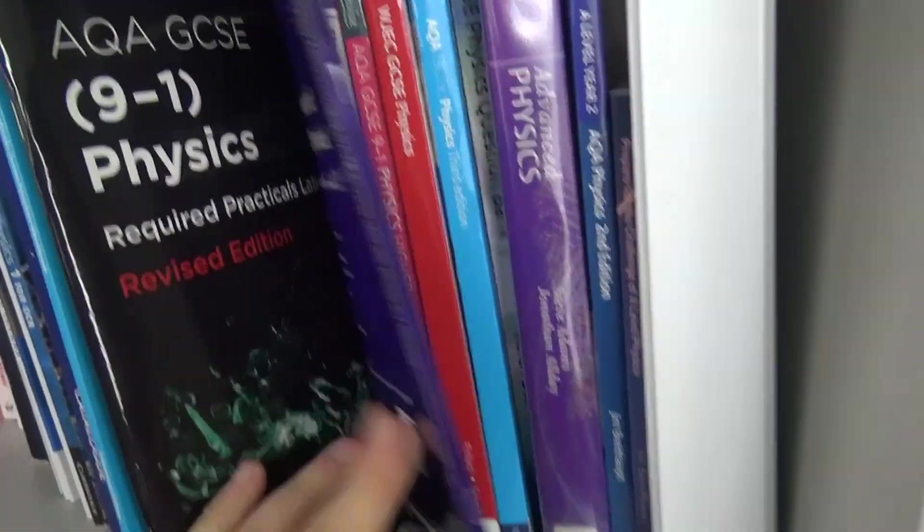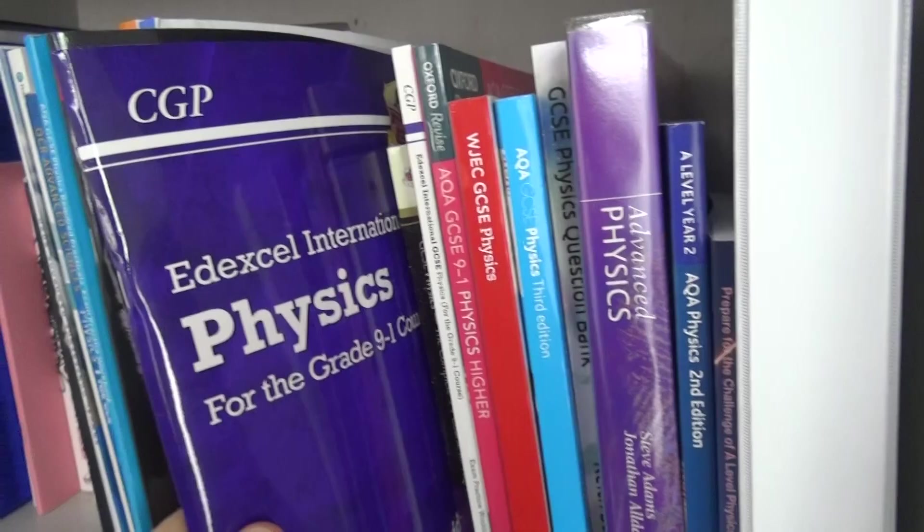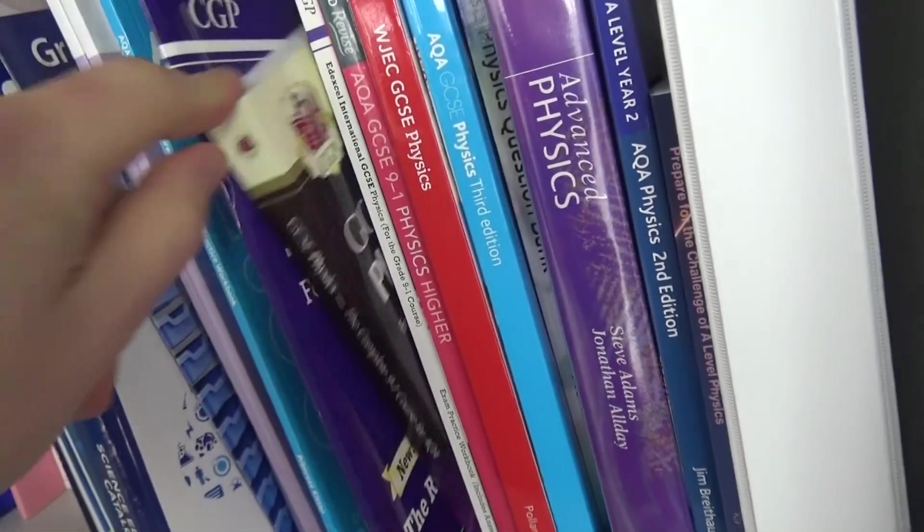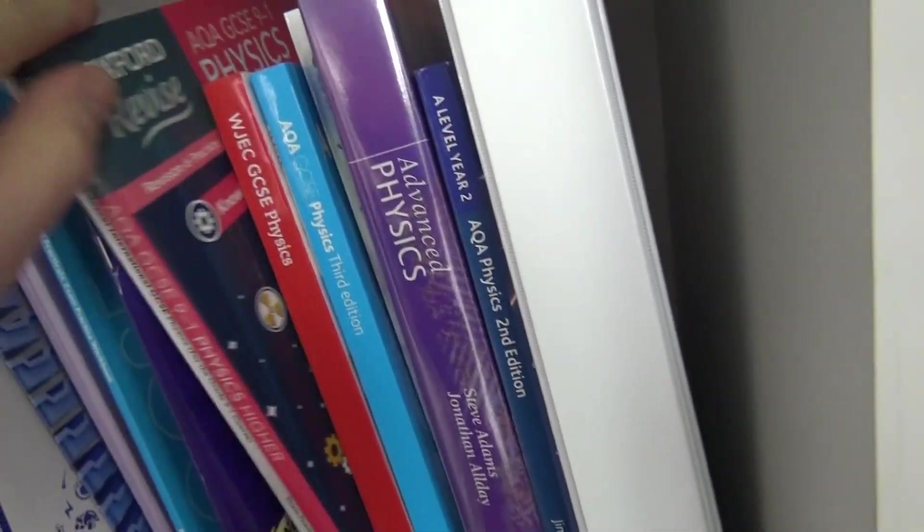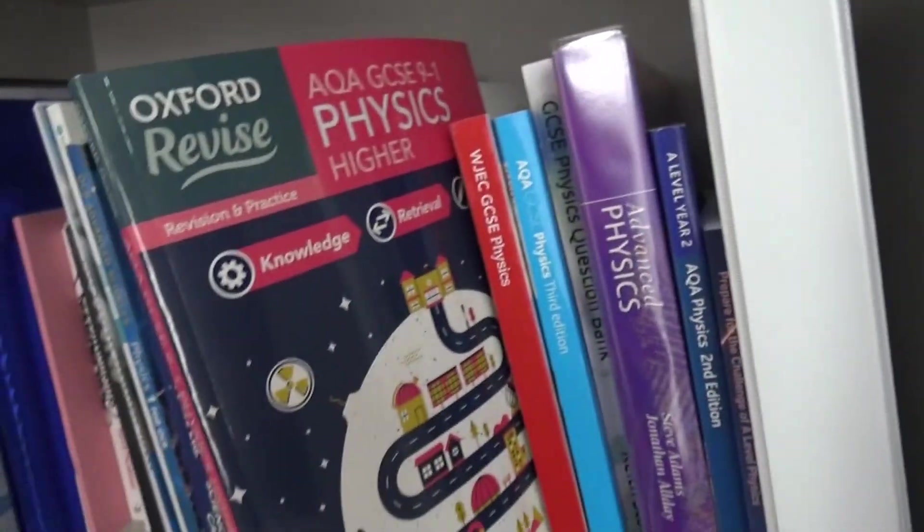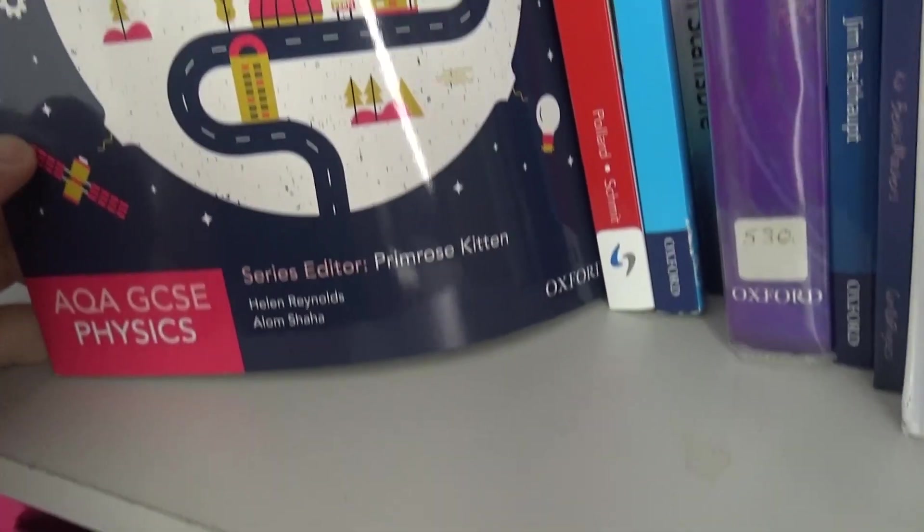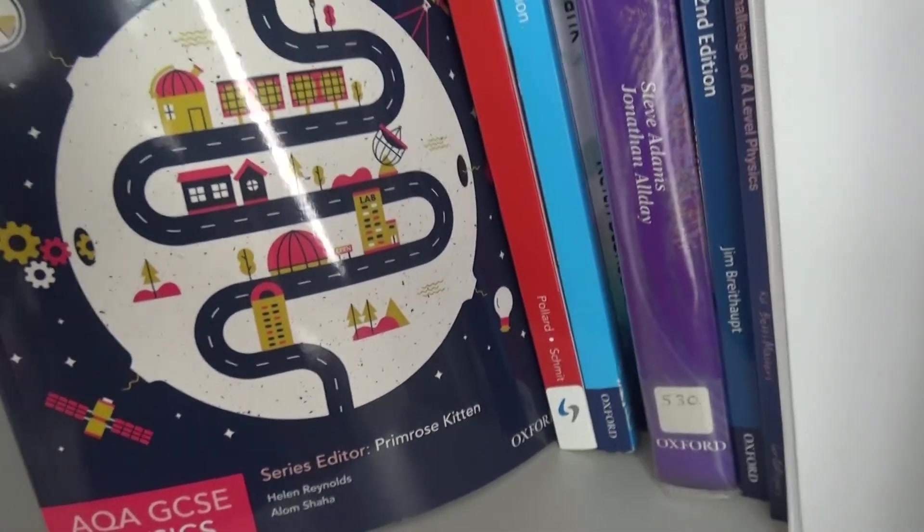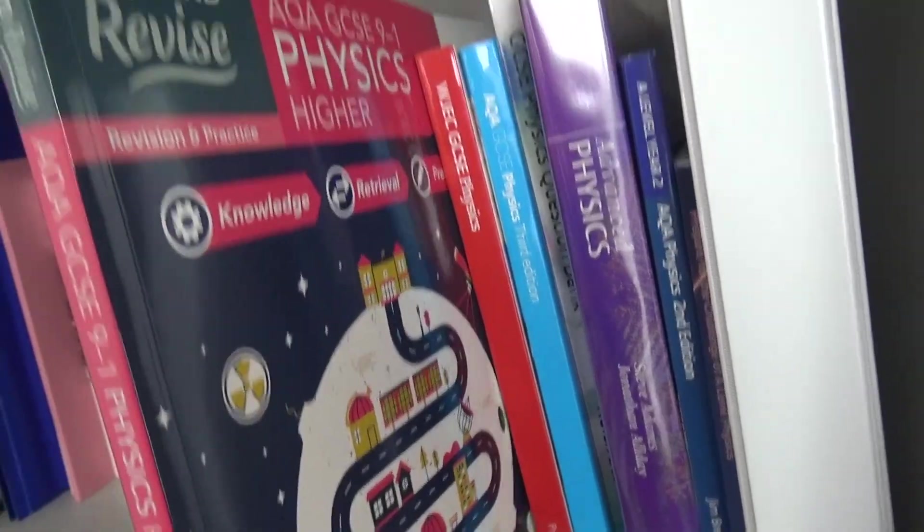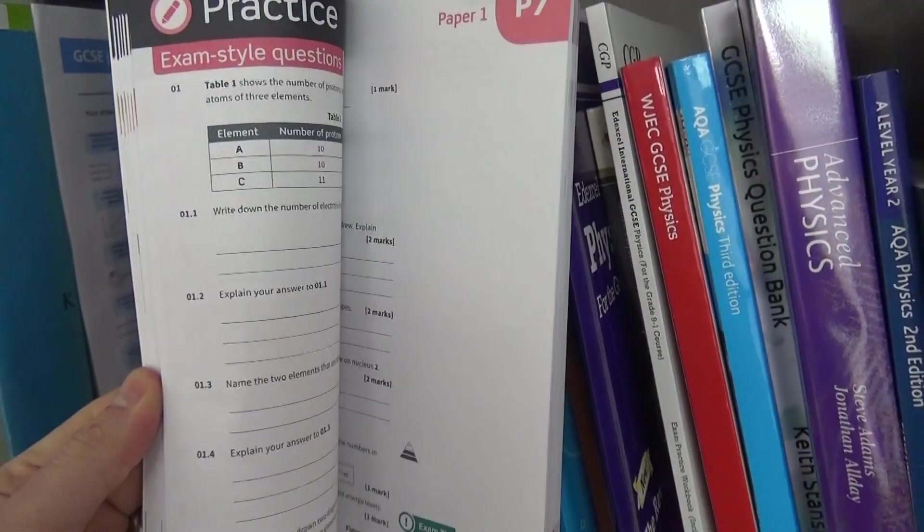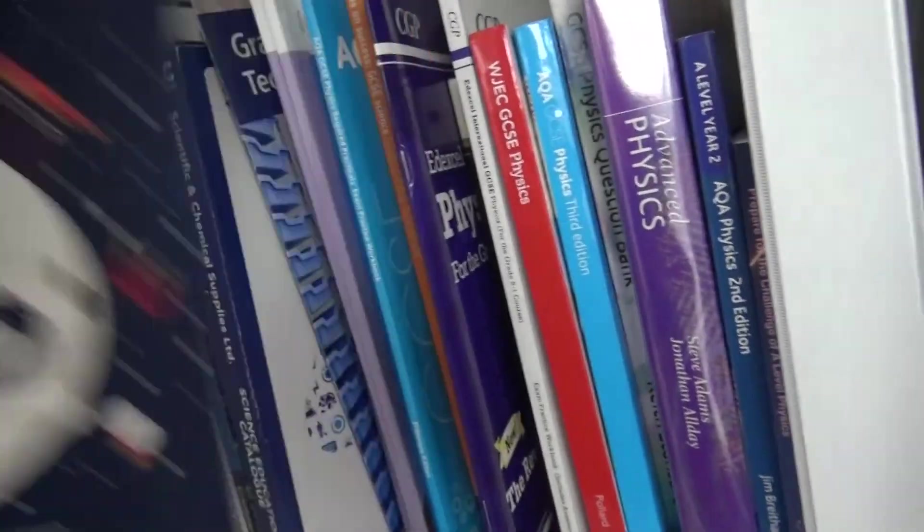I've got another one just to see what's on the market. I've got some revision guides over here, some other textbooks and things. I've just got loads of different textbooks. This one here I find is really good. Helen Reynolds, Alom Shaha, and also Primrose Kitten has been a series editor. These books here, if you're doing GCSE, are really useful, loads of good questions in those.